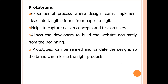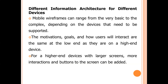The fifth characteristic is prototyping. This will help you to capture the design concept and test it. It is an experimental process for implementing ideas into a tangible form — either using a paper format or a digital format. The sixth characteristic is that each and every mobile device has its own specifications, so you have to use a different mobile information architecture for different devices. This covers the five phases and six characteristics of mobile information architecture.